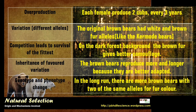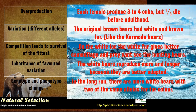On the opposite end of the spectrum, we find the polar bears. Polar bear females produce three to four cubs, but one in three die before they reach adulthood. The original brown bears had white and brown fur like the kermode bears. On the white ice, the white fur gives better camouflage and prey can't see the hunting bears. The white bears reproduce more and longer because they are better adapted. In the long run, there are more white bears with two of the same white alleles for fur. Other characteristics can be included, such as rough sandpaper claws for traction or the ability to swim.